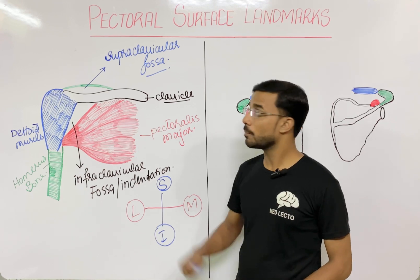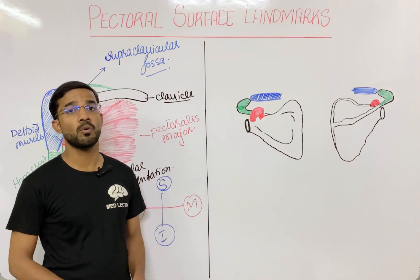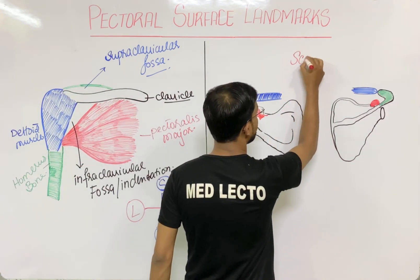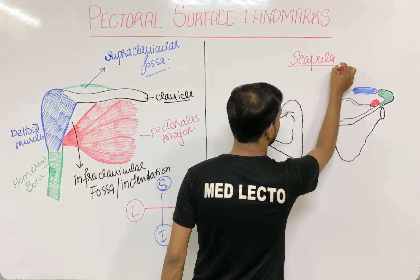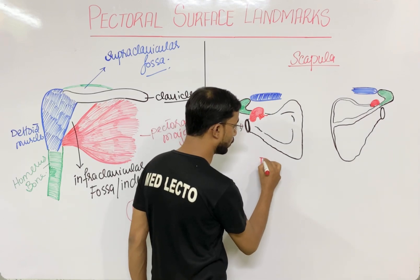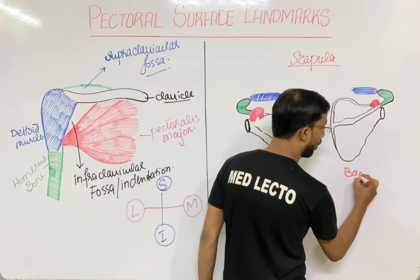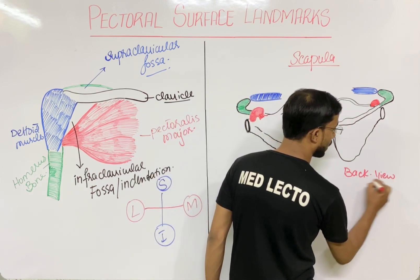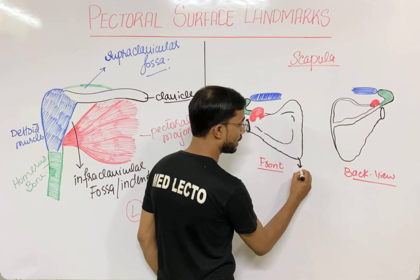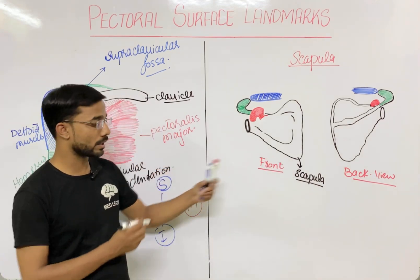You can easily palpate both these fossae. Next we will look at two important components of the scapula. This view is the front view of the scapula, and here is the back view of the scapula. It has two most important components.